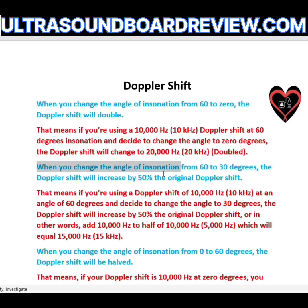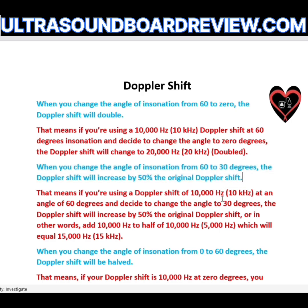When you change your angle of installation from 60 to 30 degrees, the Doppler shift will increase by 50 percent. So if you're using a Doppler shift of 10,000 Hz at 60 degrees and change to 30 degrees, you add 50 percent of 10,000 Hz, which is 5,000 Hz, giving you 15,000 Hz. Summary: 60→0 you double; 60→30 you increase by half.